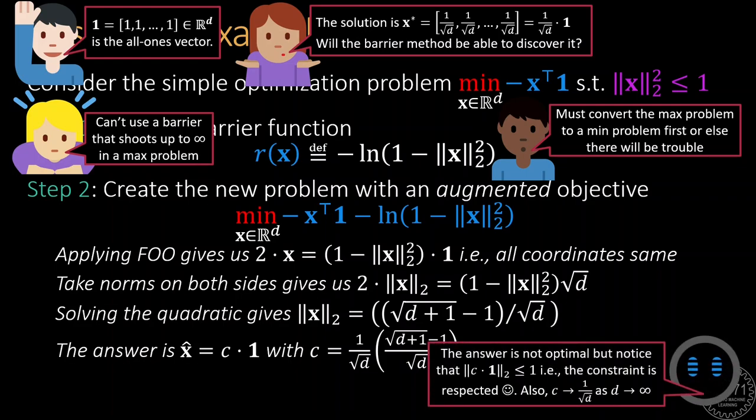However, the solution is not quite the correct one, although it does approach the correct solution for large values of d. This is due to the distortion to the objective introduced by the barrier function.